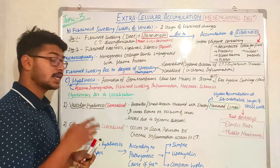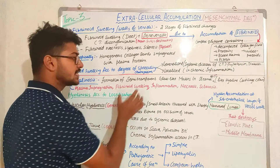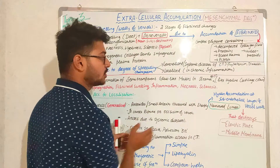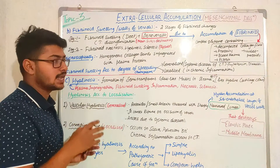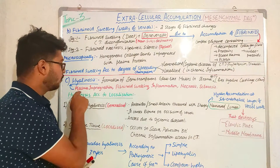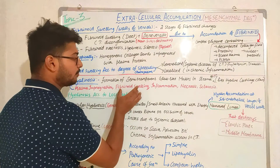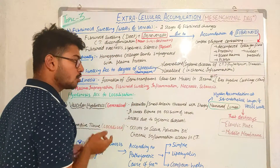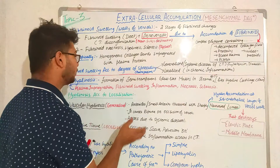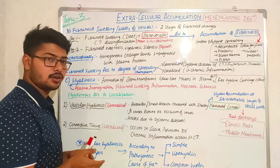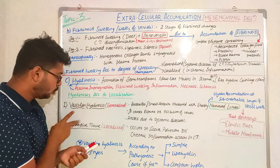The next type of protein extracellular accumulation is hyalinosis. In hyalinosis there is accumulation of hyaline-like semi-transparent glassy pink structures or masses in the stroma of connective tissue, having colors exactly like hyaline cartilage. Hyalinosis occurs due to plasma impregnation of connective tissue, fibrinoid swelling, inflammations, necrosis, and sclerosis — meaning stiffening of the connective tissue.